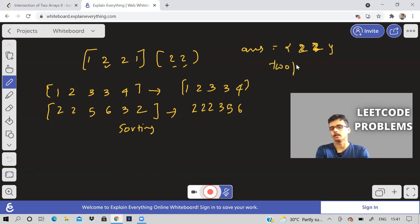Now I'll use a two pointer method. What is two pointer method? Basically, I'll take a pointer which will be pointing on the first index of the first array and similarly first index of the second array. So let it be I and let it be J.